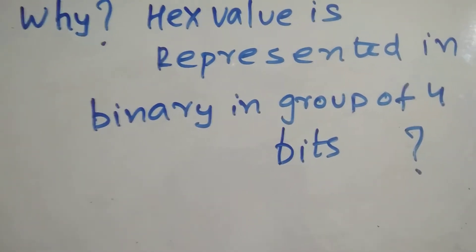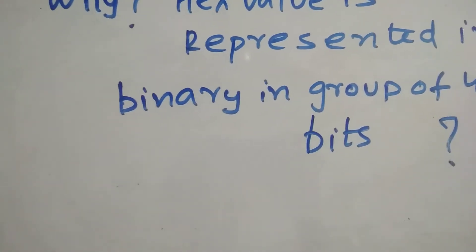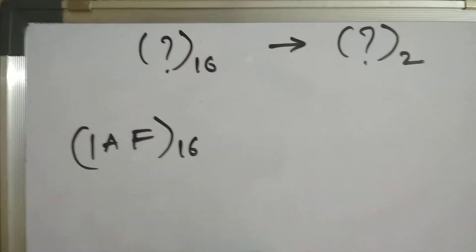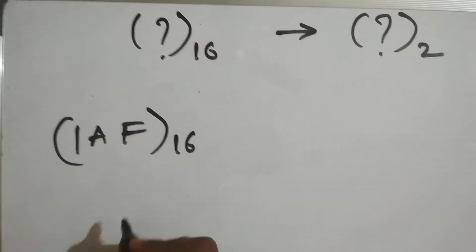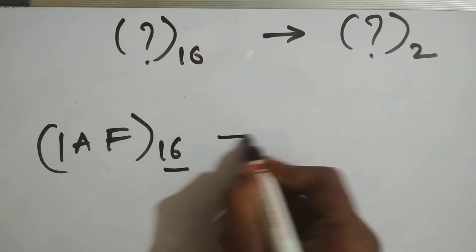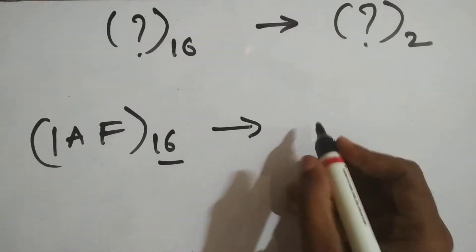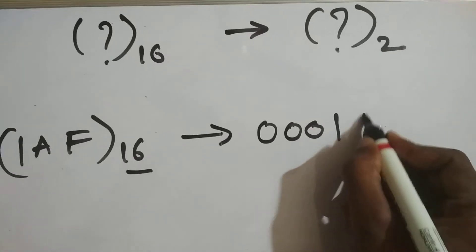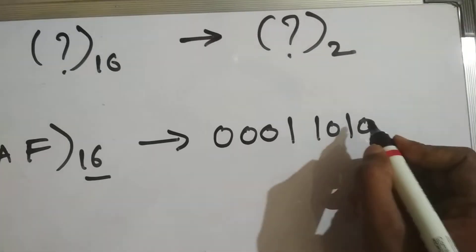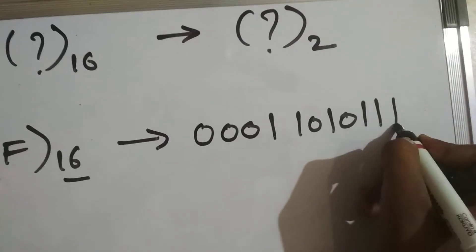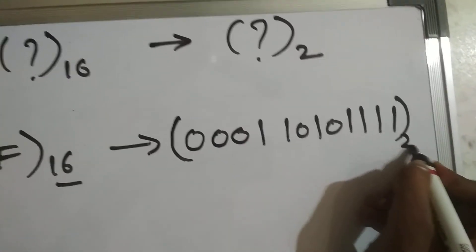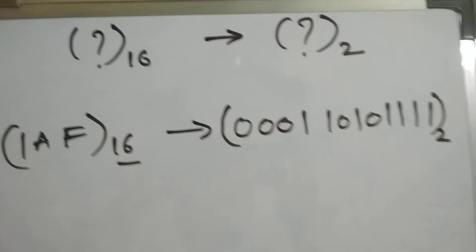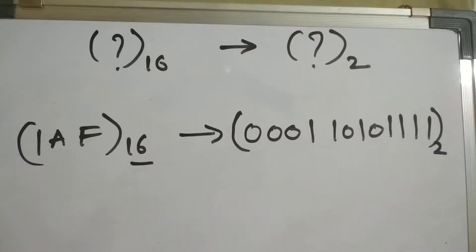Before going to the reason, I want you to see how the conversion of hexadecimal to binary is done. Let's consider an example: the hexadecimal value 1AF (base 16). How is it written in binary? It's written in groups of four bits. The digit 1 becomes 0001, A is ten so it becomes 1010, and F is fifteen so it becomes 1111. This is how hexadecimal-to-binary conversion works.